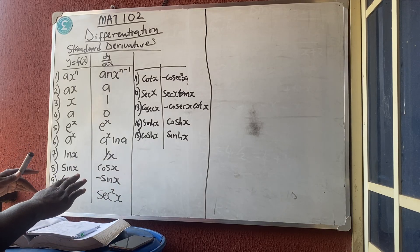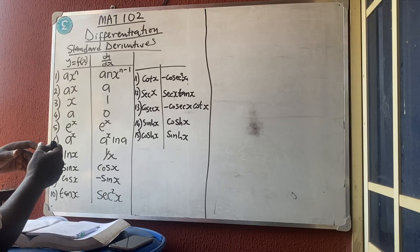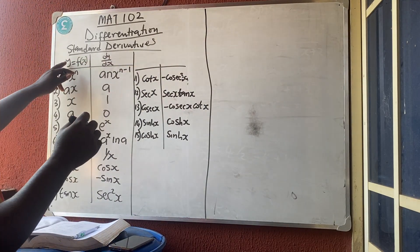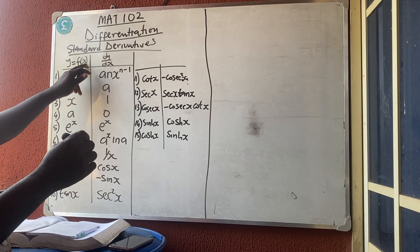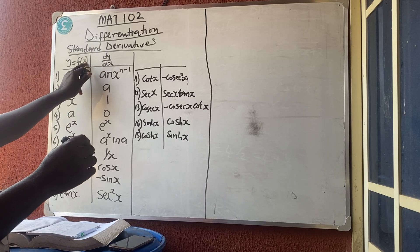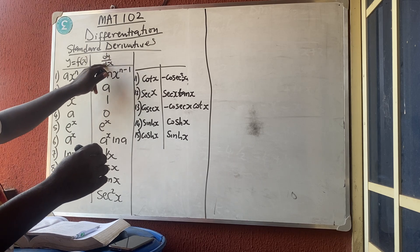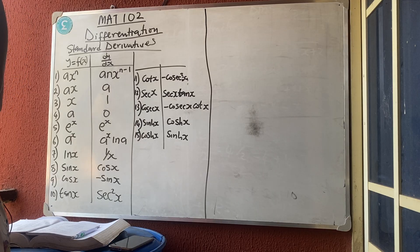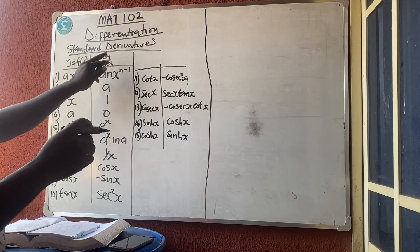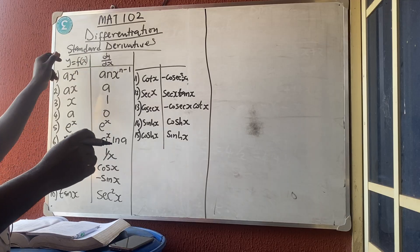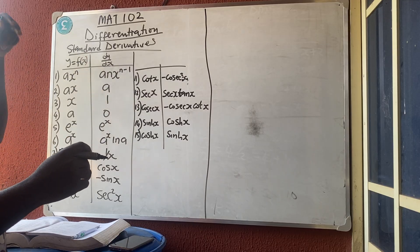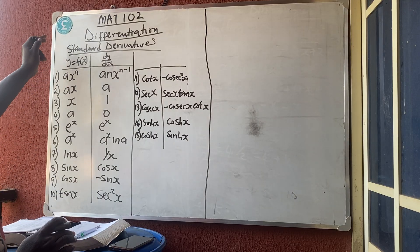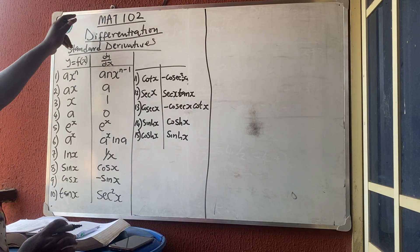The first rule says that in differentiation, if y is a function of x, it means y depends on x. That is why y is called the dependent variable while x is the independent variable — x does not depend on anybody.